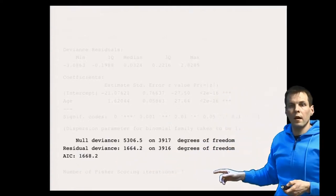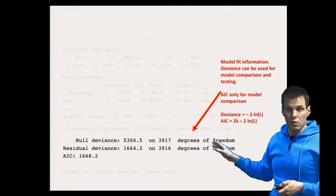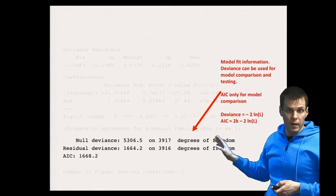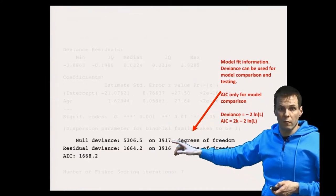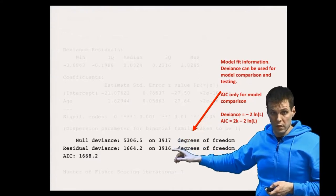The null deviance is a deviance for a model with intercept only, so a model where none of the explanatory variables explain the dependent variable at all. Here we have 3970 degrees of freedom for the null deviance. Then the deviance for the estimated model is the residual deviance.